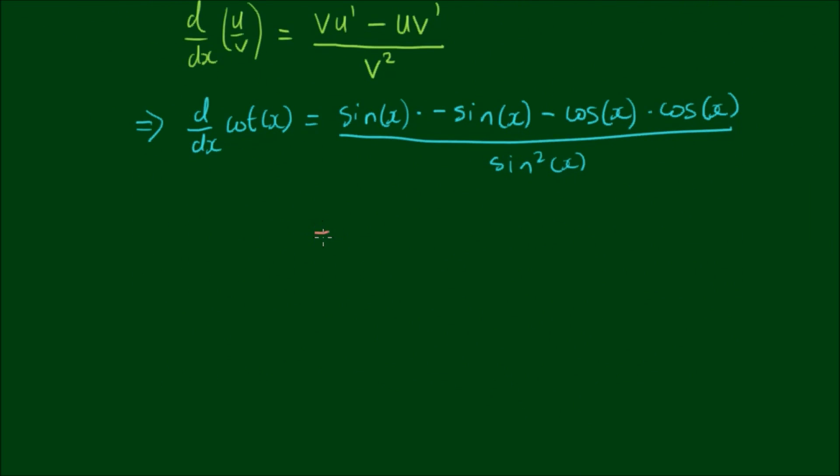Okay, let's clean up the numerator a little bit. So we have negative sine by sine is sine squared of x minus cosine by cosine is cosine squared of x divided by sine squared of x.